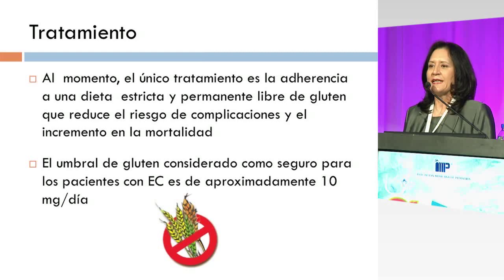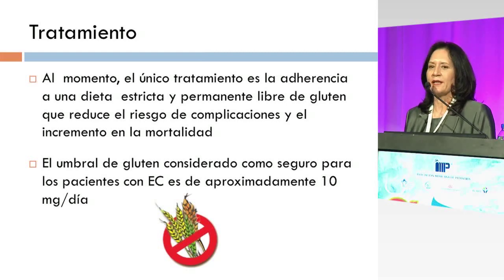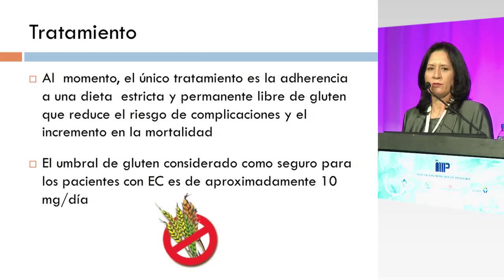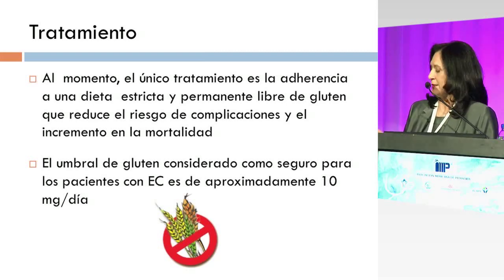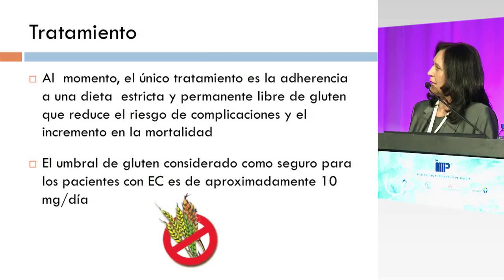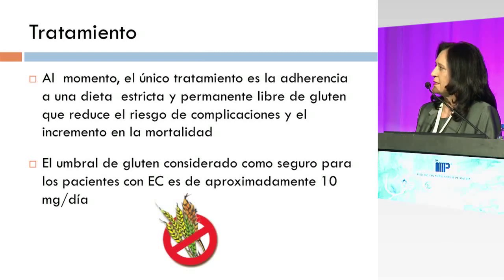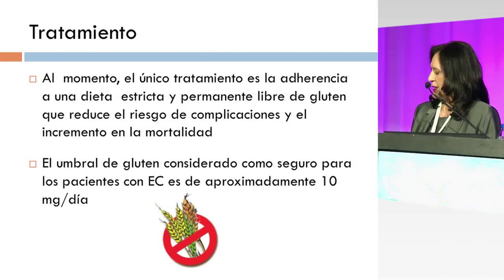El tratamiento de la enfermedad celíaca parece muy sencillo cuando le decimos a la mamá: señora, su niño es celíaco y va a estar 70, 80 años de su vida con una dieta de restricción. Parece fácil pero no lo es. Básicamente ese sería el tratamiento de los celíacos, y se cree que el umbral del gluten que se considera como seguro para estos pacientes es de 10 miligramos por día.